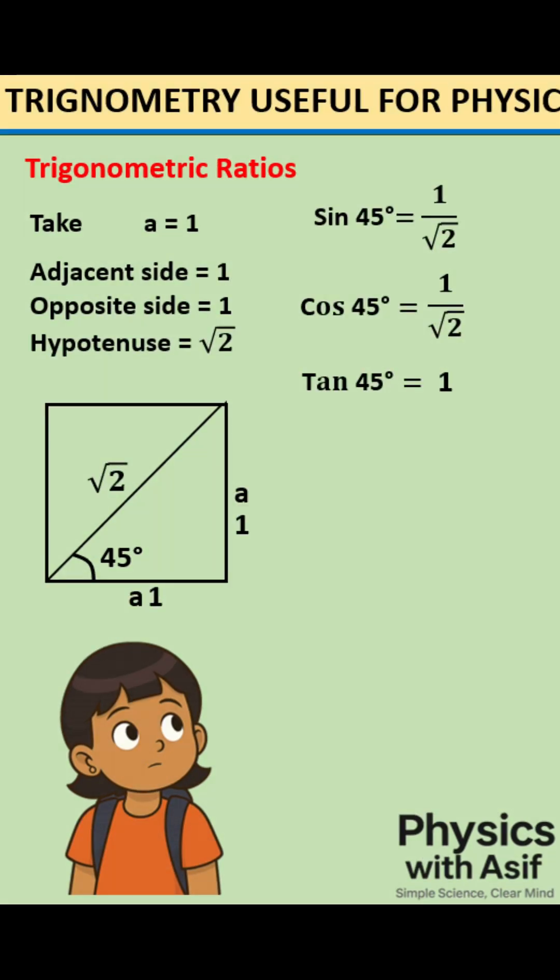Now sine 45 degrees equals 1 over square root 2. Cosine 45 degrees equals 1 over square root 2. Tangent 45 degrees equals 1.